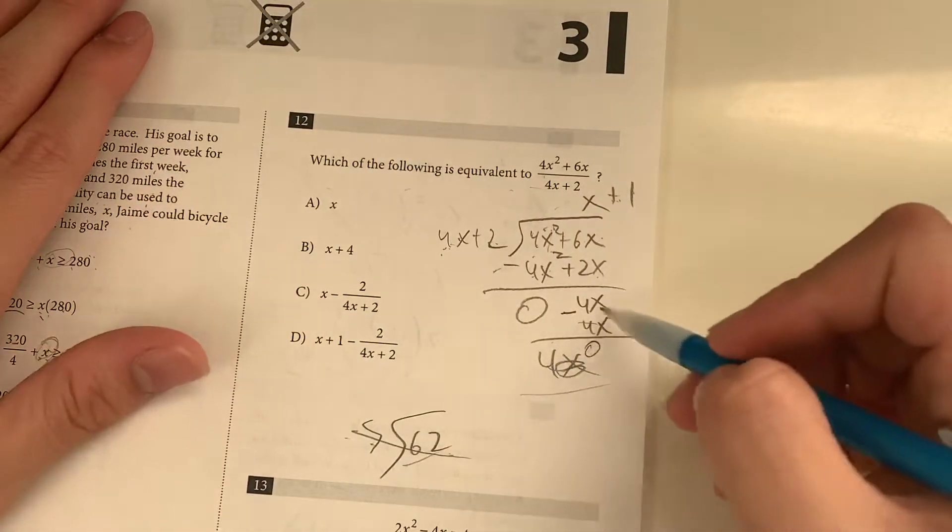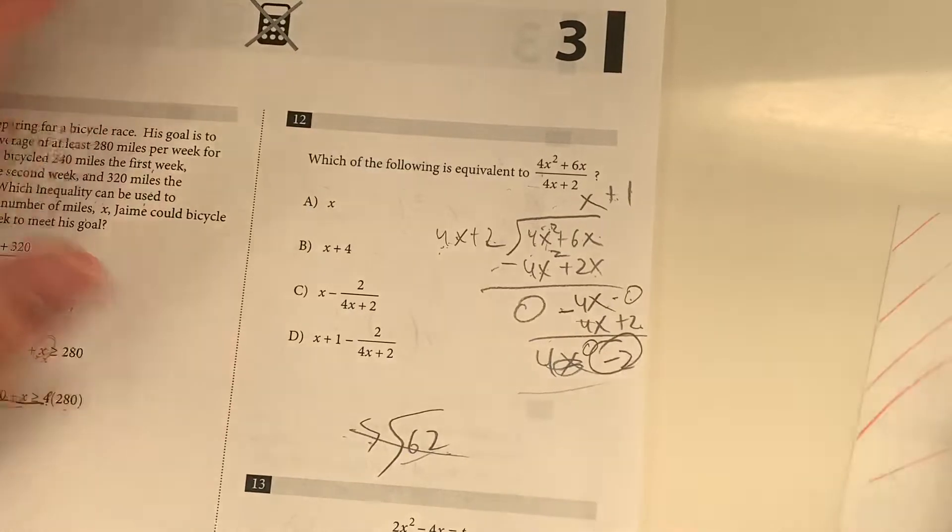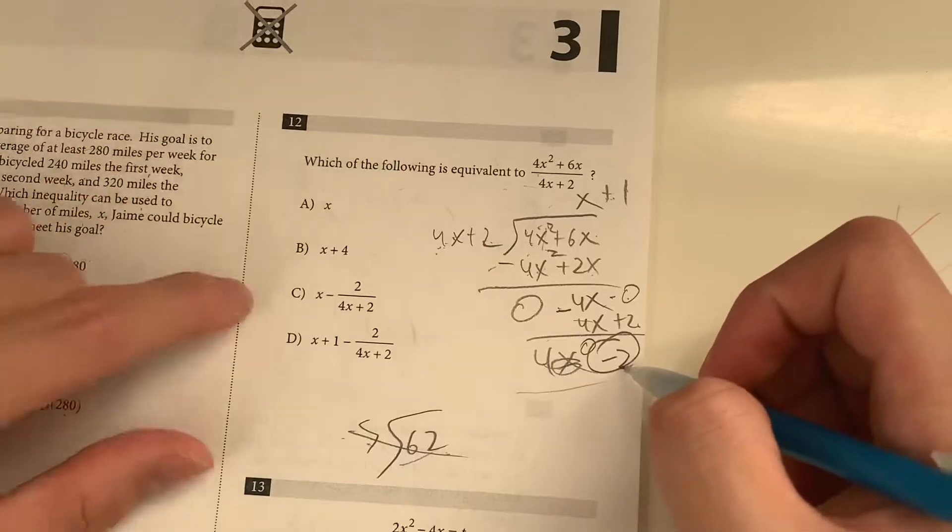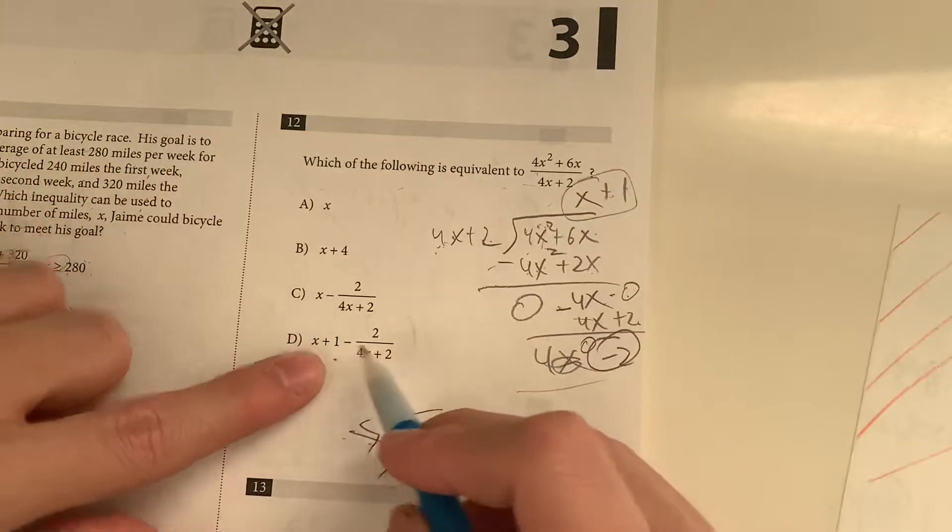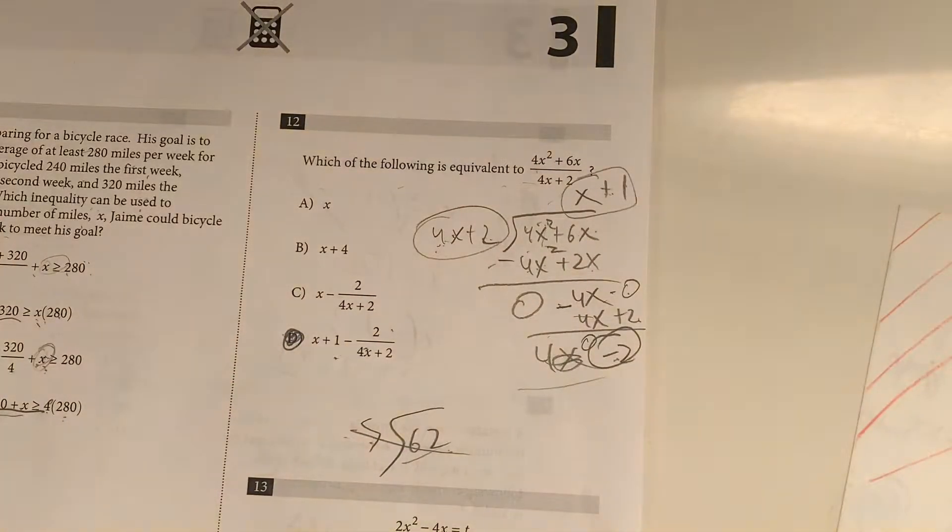4x minus 4x gives us 0. And this is 0. 0 minus 2 gives us negative 2. So we have a remainder of negative 2, meaning x plus 1 is going to be answer minus the remainder over the divisor. So your answer choice should be choice D.